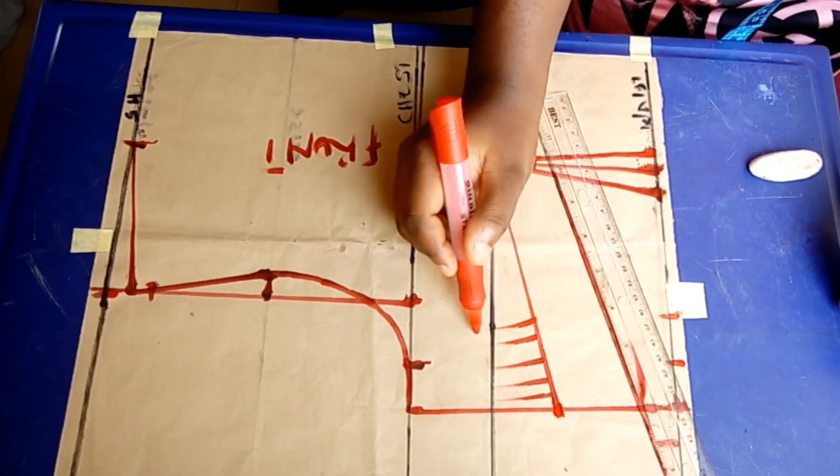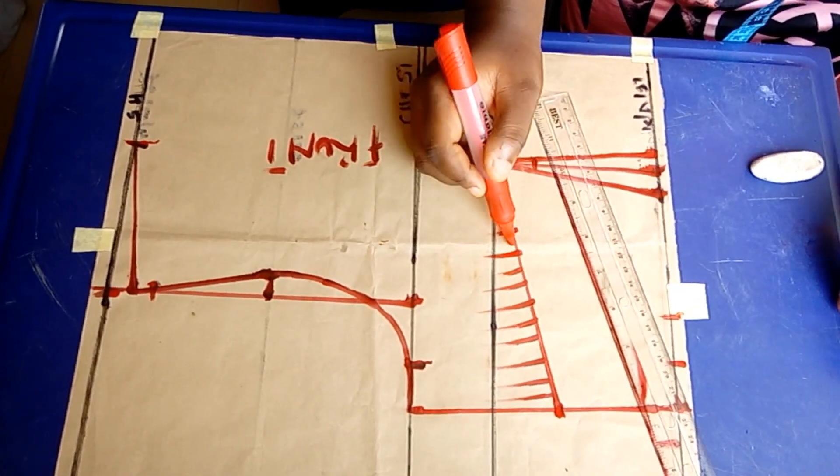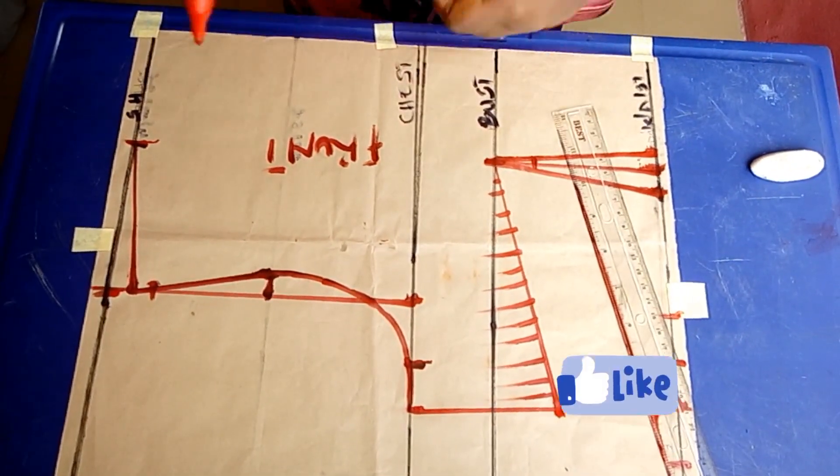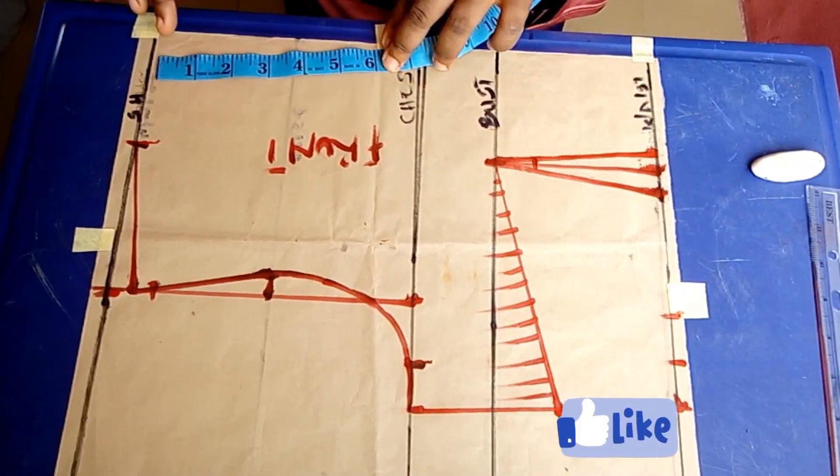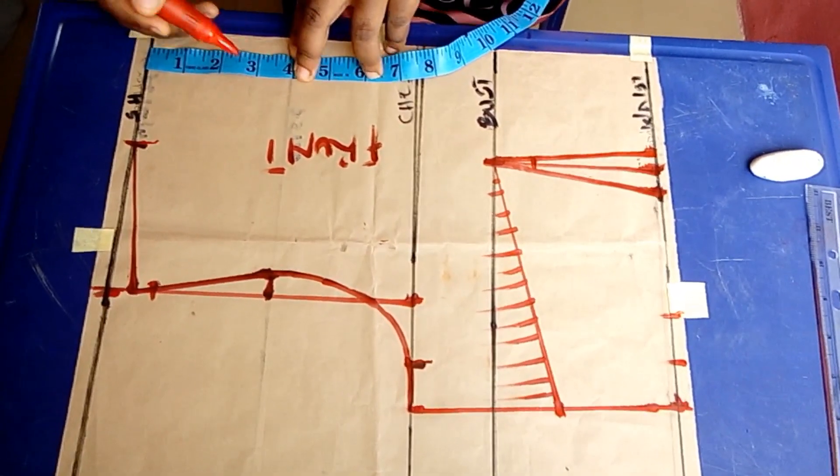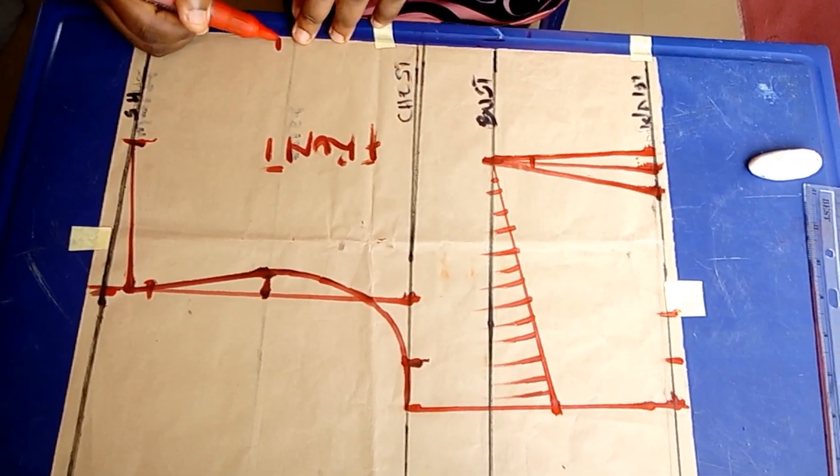This is going to serve as a side dart in order to give the bust a very good fitting for the bust bulges. Right now for my neck depth I'm going in by three and a half.